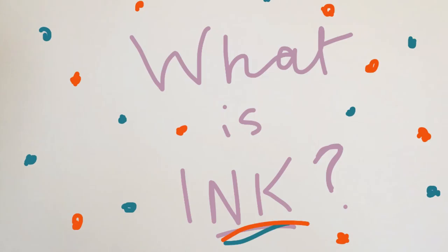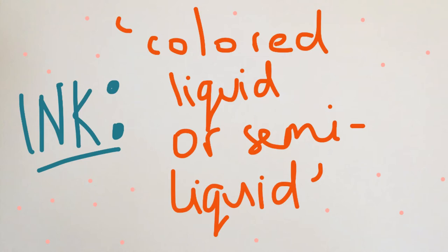So what is ink? Ink is basically a colored liquid or semi-liquid substance used to color a surface, usually with a design, text, or image.